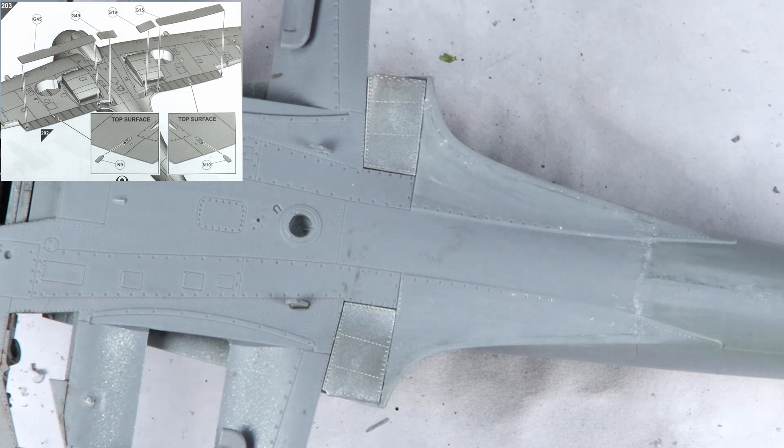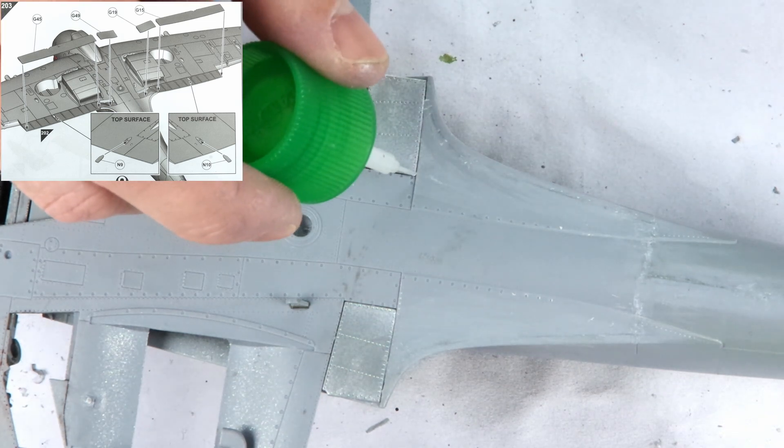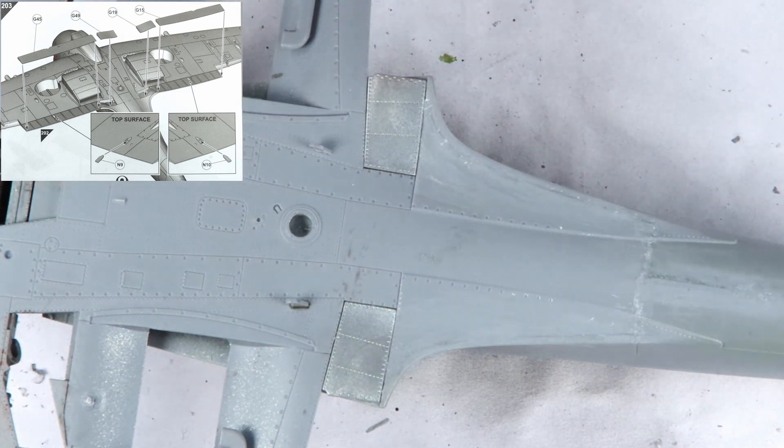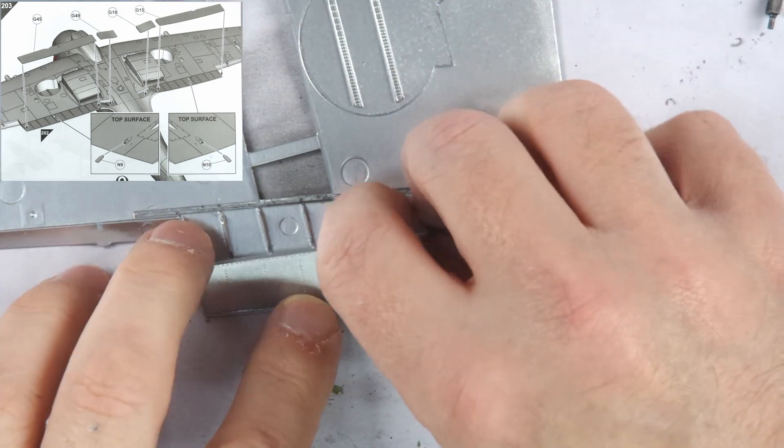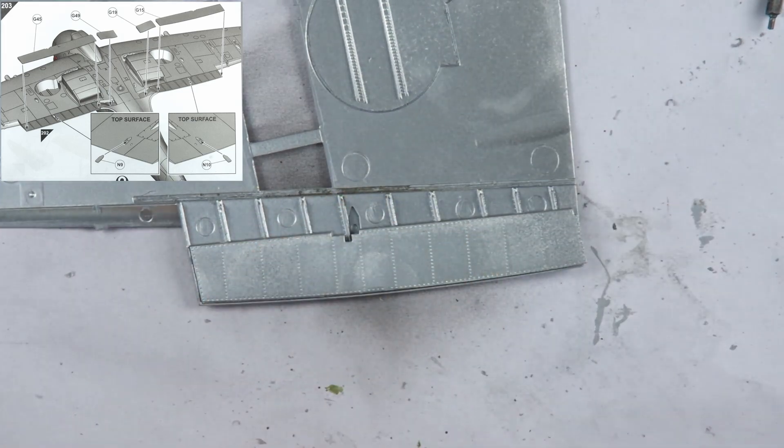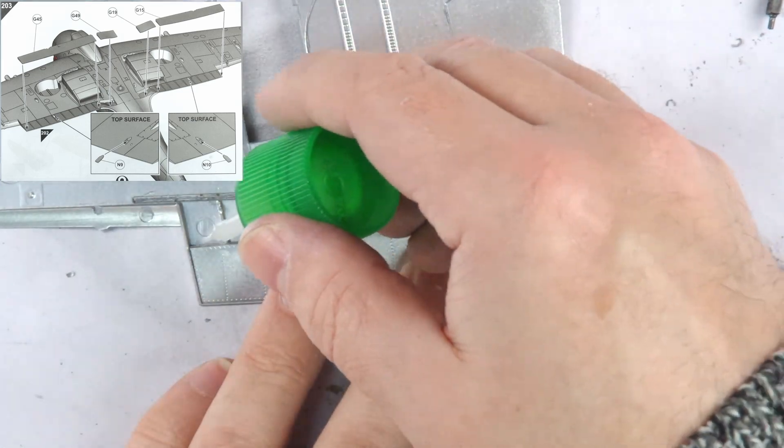Skipping ahead to step 203, I attached the flaps in their raised position, since Spitfires didn't generally have lowered flaps on the ground except for takeoff and landing. This was straightforward since the sections near the fuselage are separate from those on the inner wings, and they went on without any issues.